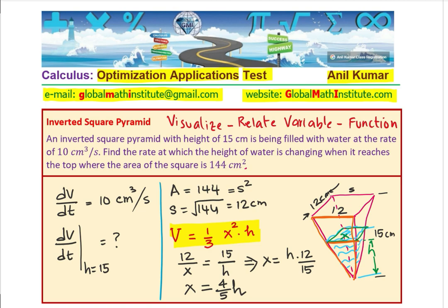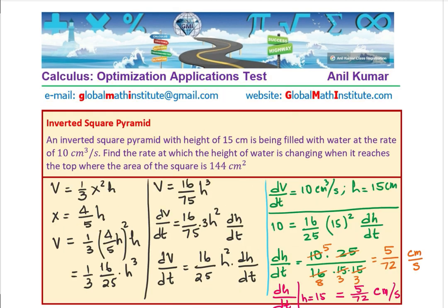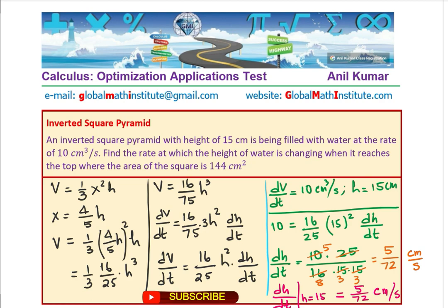What we did here was: first we understood the inverted square pyramid and sketched it. Then we related the height of water with the width of the square using similar triangles, and used the pyramid volume formula — one-third of base area times height. The derivative gave us dH/dt in general, and substituting H = 15 gave us the final answer. It is a rate of change application where we expressed the answer as a fraction.